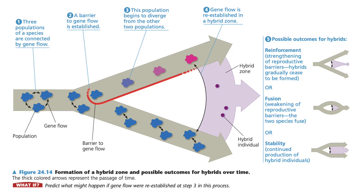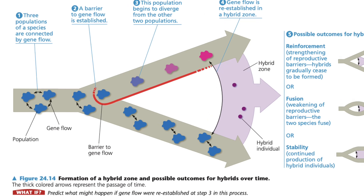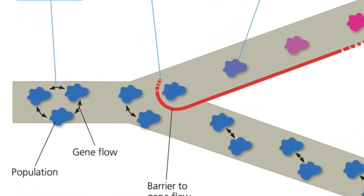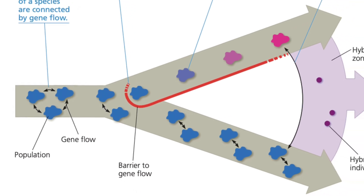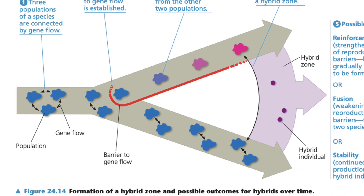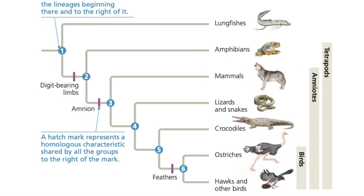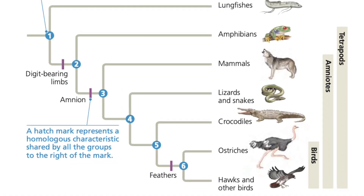Recall that in macroevolution, we're primarily interested in the idea of speciation. In speciation, populations of an ancestral species may become reproductively isolated, leading to gradual accumulation of genetic differences that result in two daughter species. And cladograms are simply graphical representations of just that concept, where those nodes and branches can indicate evolutionary relationships.